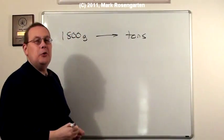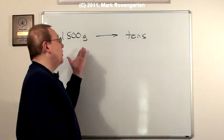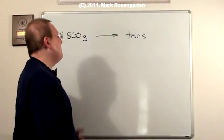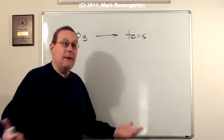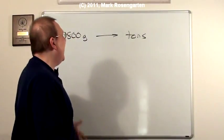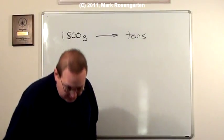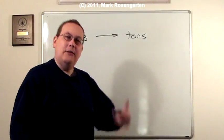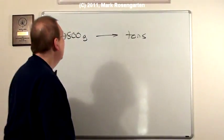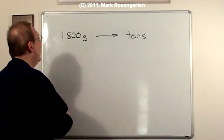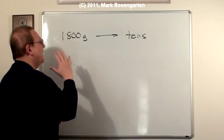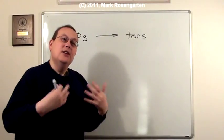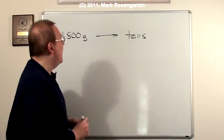Now, if you happen to know the conversion factor, how many grams there are in a ton, you could do this in one step. But I don't know personally of any conversion factor off the top of my head. However, I can figure it out, because I know how many grams there are in a pound, and I know how many pounds there are in a ton, so I can set this up step by step.